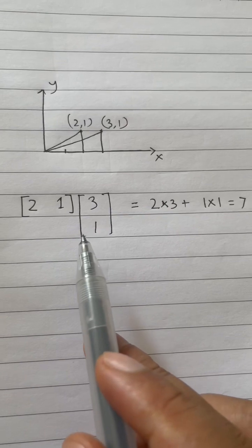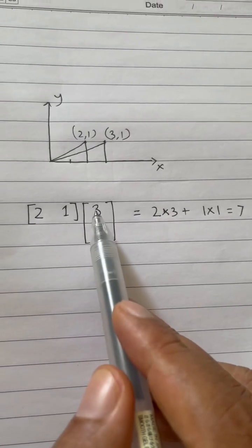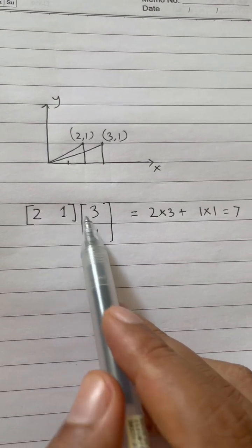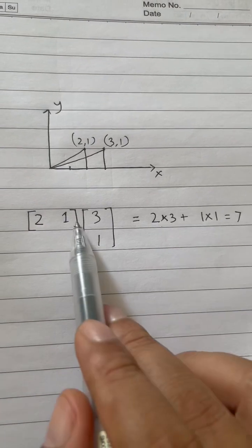Now as I'm going to do a dot product, so here this one going to be multiplied with this one, and then this one going to be multiplied with this one. So that's what we did over here.